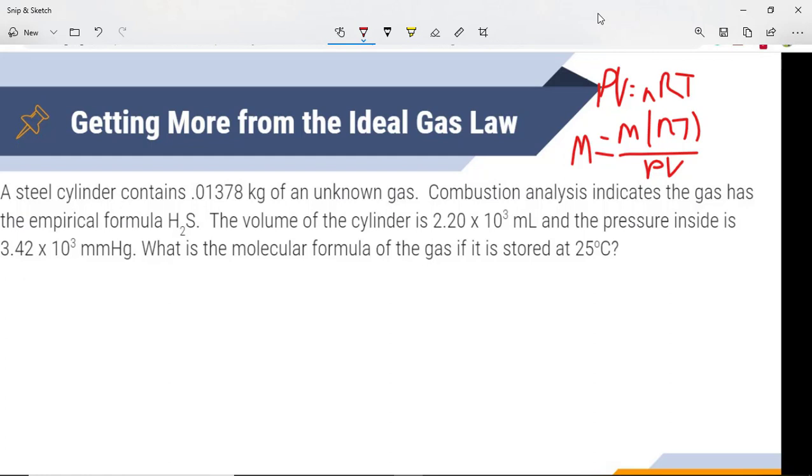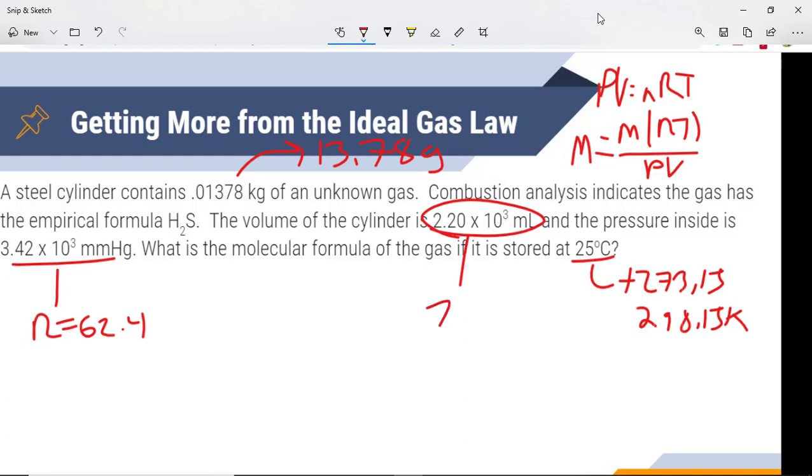So for example, our temperature here, we need to add 273.15. So we're looking at 298.15 K. We have kilograms of an unknown gas, so we need to get that to grams. So we need to multiply by a thousand to get 13.78 grams. Millimeters of mercury is perfectly fine. We just need to make sure that we remember our R value for millimeters of mercury is 62.4. And here, we're given the volume of the cylinder, but it is in milliliters, so we must convert that to liters.